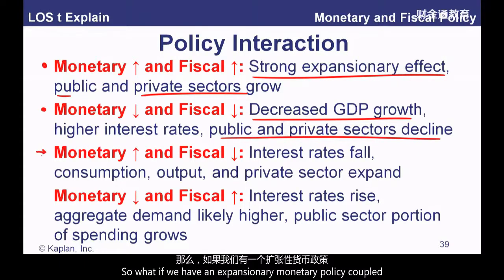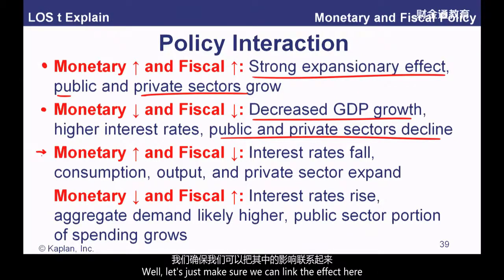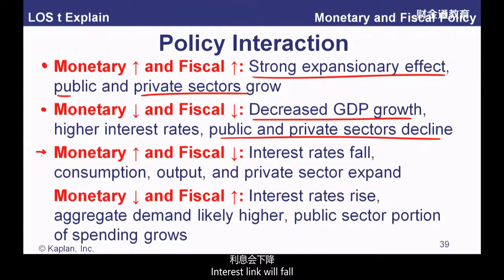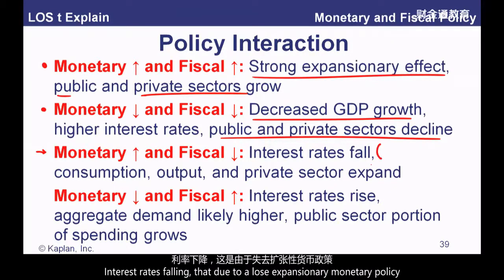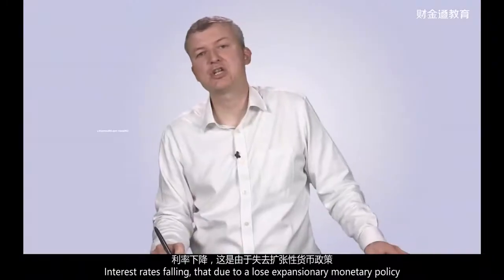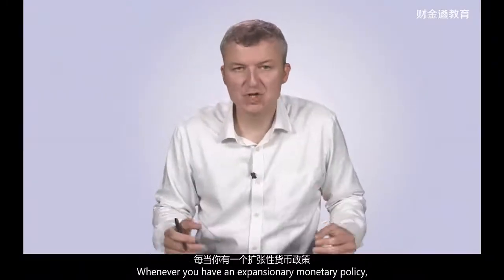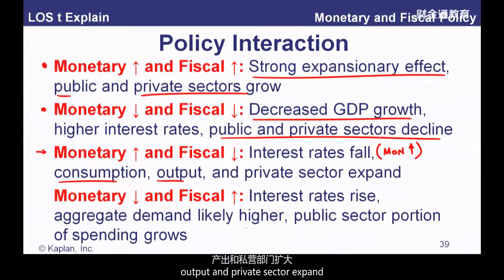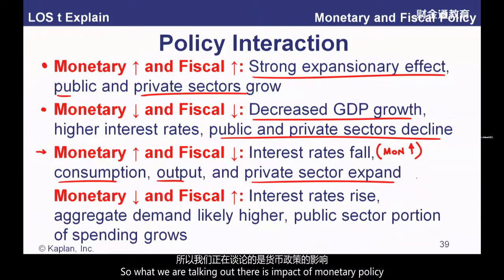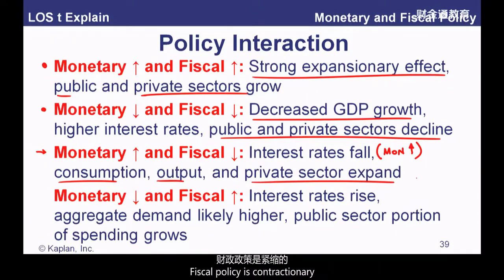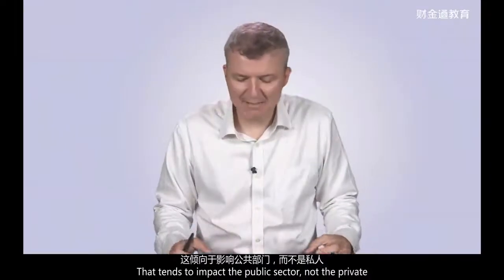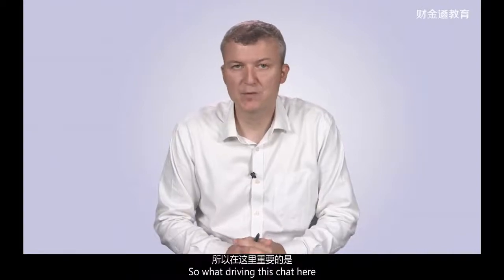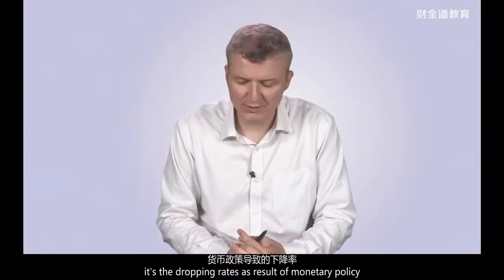The interesting cases involve contrasting policies. If we have expansionary monetary policy coupled with contractionary fiscal policy: interest rates will fall due to loose monetary policy. Because interest rates have fallen, consumption, output, and the private sector expand. Fiscal policy is contractionary and tends to impact the public sector, not the private. So what's driving the outcome here is the drop in interest rates as a result of monetary policy.